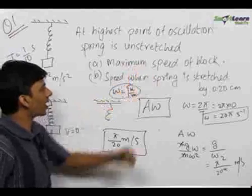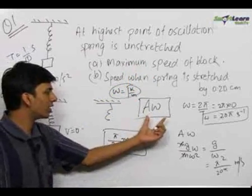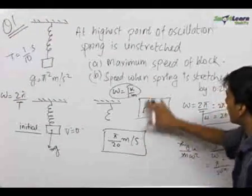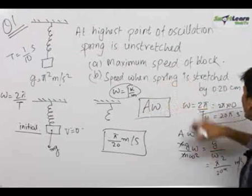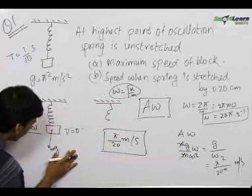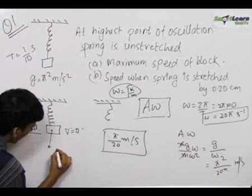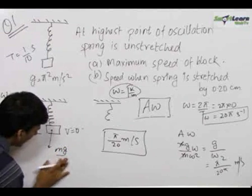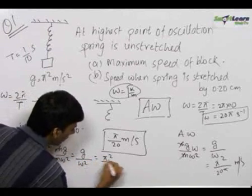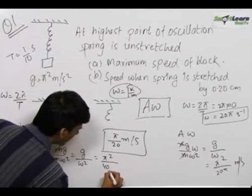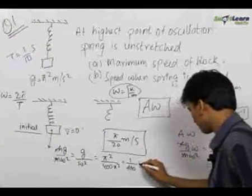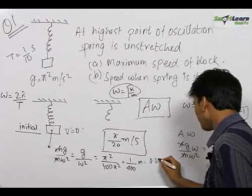So we get the answer for the first part: the maximum speed of the block is π/20 meters per second, found by applying concepts of linear simple harmonic motion. Now for the second part, let us find the amplitude. Amplitude equals mg/k equals g upon omega squared equals π² upon (20π)² equals 1 upon 400 meters, which equals 0.25 centimeters.